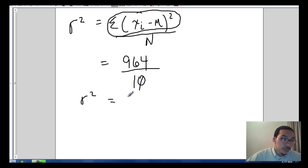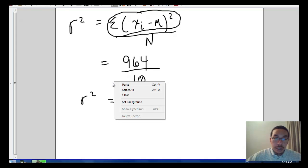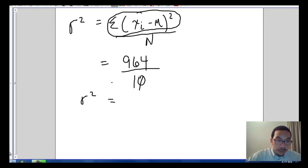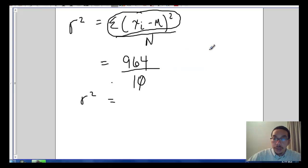So sigma squared will be 964 divided by 10. Let's see what that comes up to be. 964 divided by 10, we get 96.4. So sigma squared is 96.4, so the population variance is 96.4.